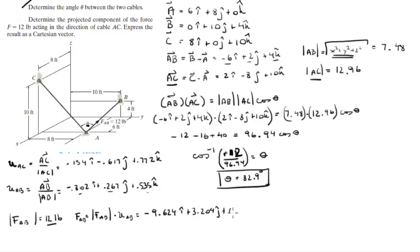Now in order to find the projection of this vector onto AC, what you got to do is the dot product times the unit vector along AC. So this is going to be negative 9.624i plus 3.204j plus 6.42k dot...